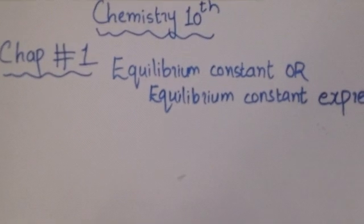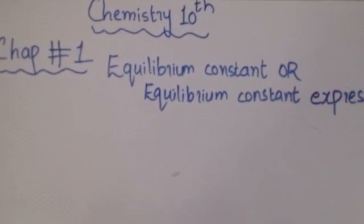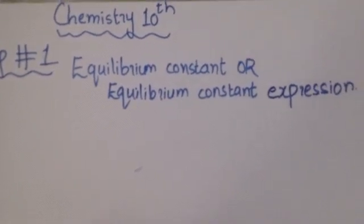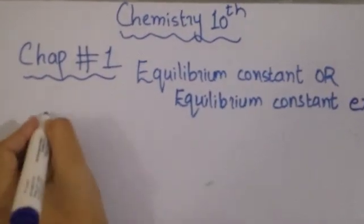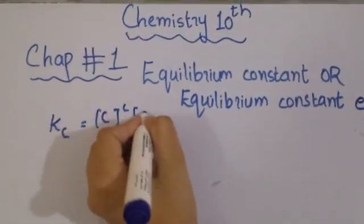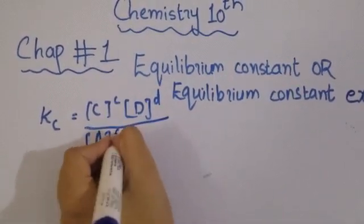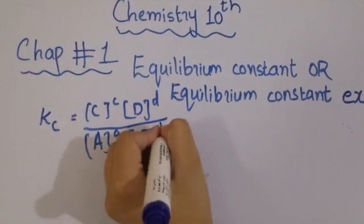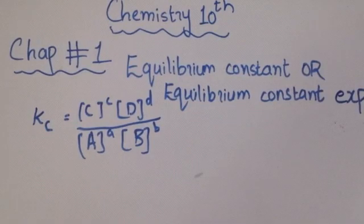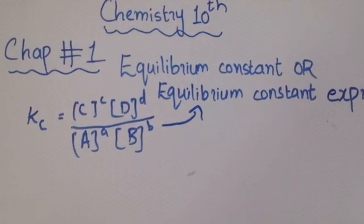Welcome to my channel — make education easy. Today our topic is the equilibrium constant expression. We previously covered the law of mass action, and at the end of that topic we wrote the equation: Kc equals concentration of C raised to small c, times concentration of D raised to small d, divided by concentration of A raised to small a, times concentration of B raised to small b. This equation is called the equilibrium constant expression.